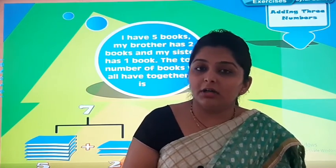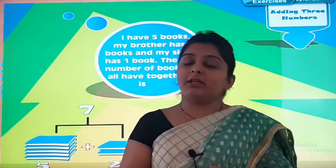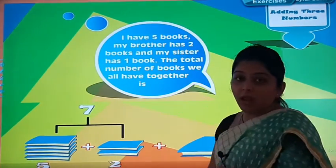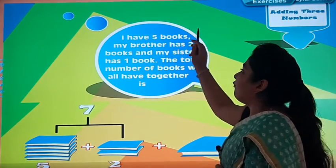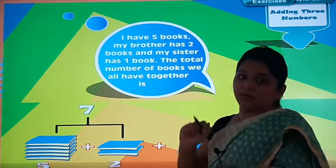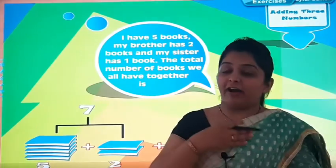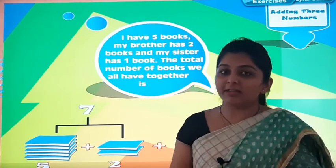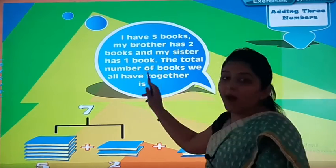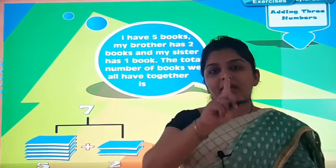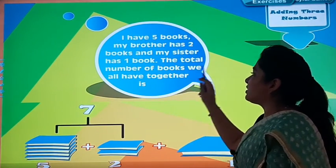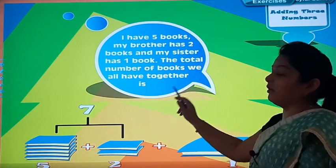Till now you have learned the addition of 2 numbers. Today we will learn addition of 3 numbers. Now, I have 5 books, my brother has 2 books, and my sister has only 1 book. The total number of books we all have together is —